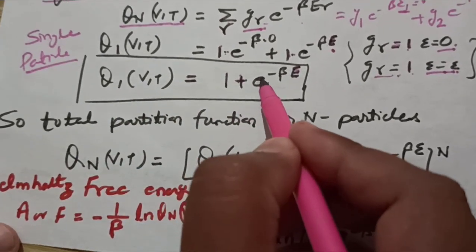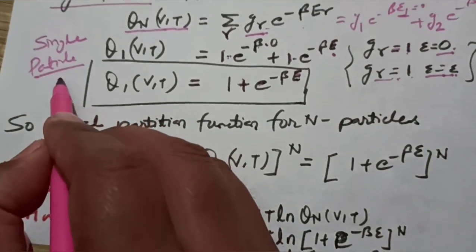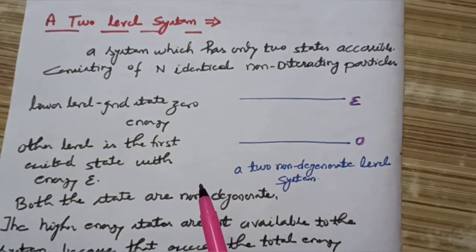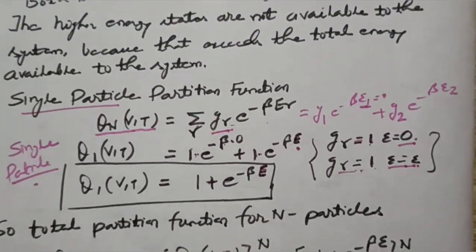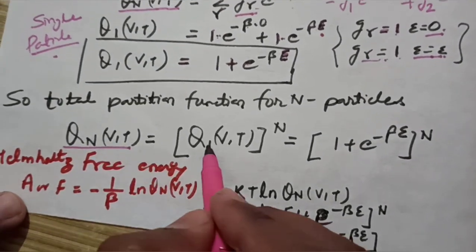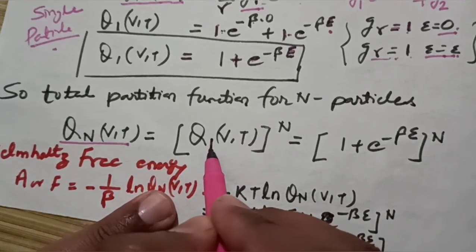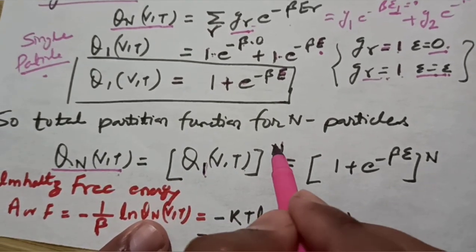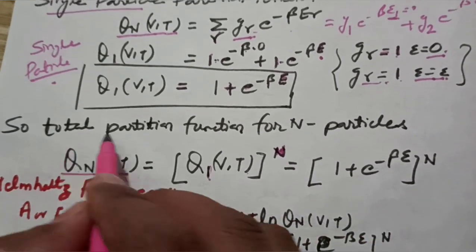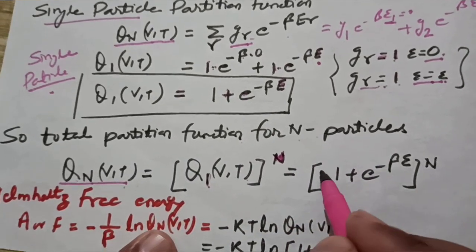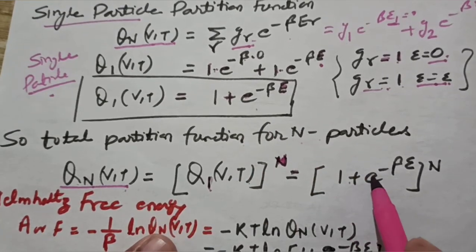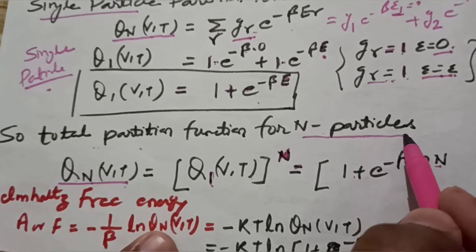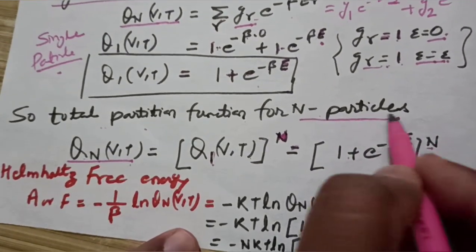This is the single-particle partition function. We now assume we have N identical non-interacting particles, so we generalize to N particles. The total partition function Q(N,V,T) equals q1 raised to the power N, which gives us (1 + e to the power minus beta epsilon) to the power N.